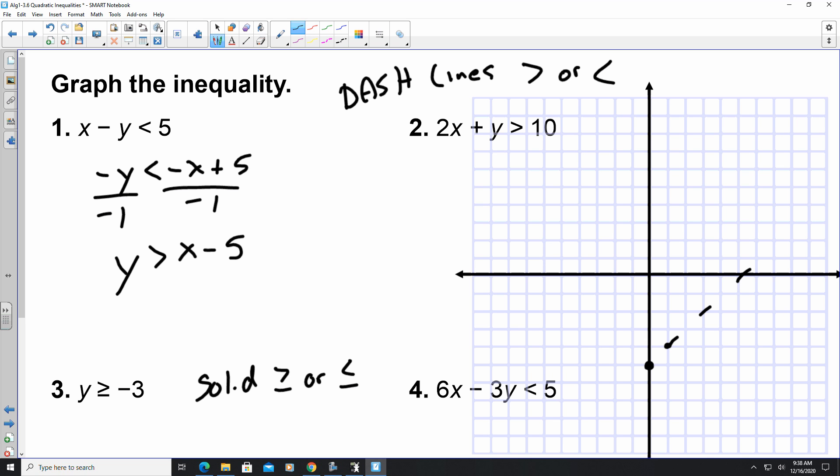It's a dashed line because it's greater than. Now there's some shading involved. You got to pick a test point. The easiest one is 0, 0. 0 is greater than 0 minus 5. Is 0 greater than negative 5? The answer is yes.